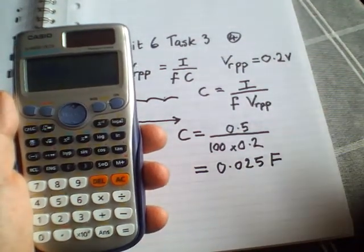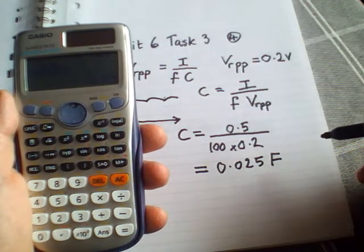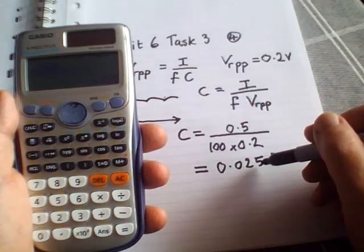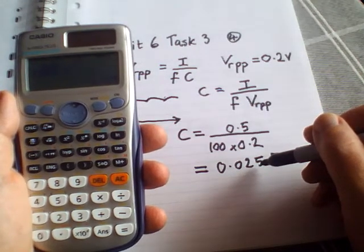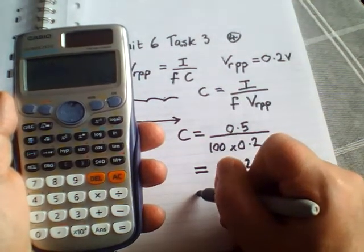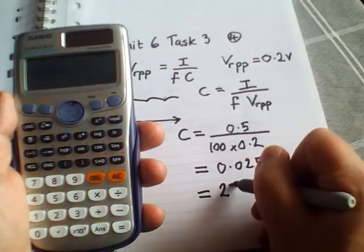Now we normally write our values for capacitors in microfarads. Micro is a millionth of a farad, so if we divide that by a million to turn it into microfarads, that would be 25,000 microfarads.